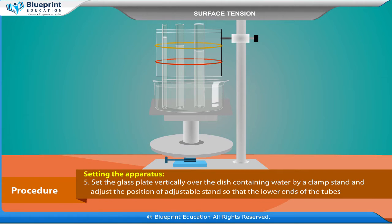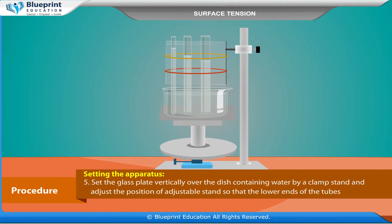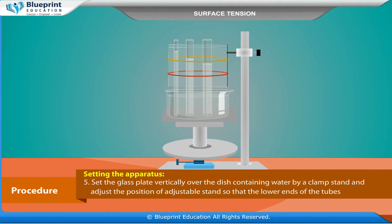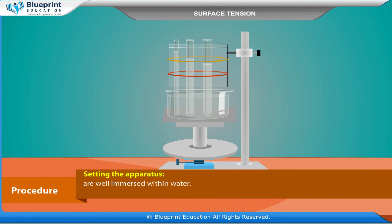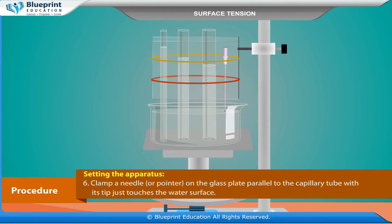Set the glass plate vertically over the dish containing water using a clamp stand, and adjust the position of the adjustable stand so that the lower ends of the tubes are well immersed within water. Clamp a needle on the glass plate parallel to the capillary tube, with its tip just touching the water surface.